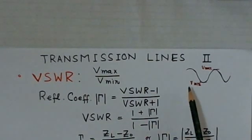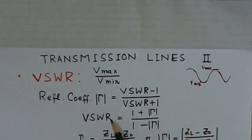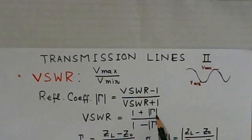This Voltage Standing Wave Ratio is also related to the reflection coefficient. It is shown related to the magnitude of reflection coefficient. The magnitude of gamma, the reflection coefficient, is VSWR minus 1 over VSWR plus 1. If I write this equation the other way, in terms of VSWR, it is 1 plus gamma magnitude over 1 minus gamma magnitude.